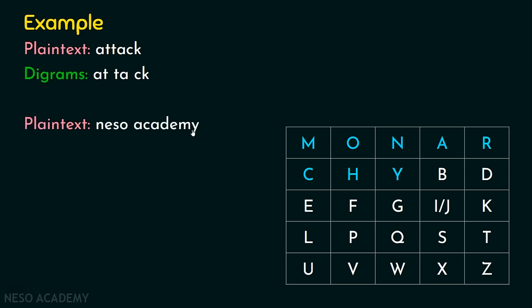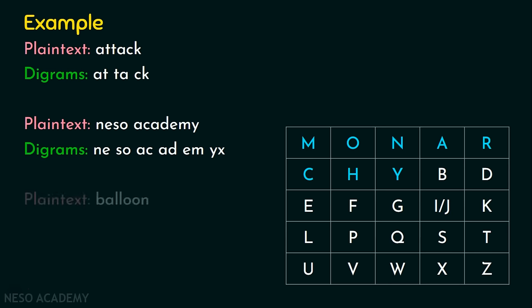For the plain text Neso Academy, we create digrams: NE, SO, AC, AD, EM, and the last letter Y is left alone. If the last letter of the plain text is left alone and not part of a digram, insert a filler character X so it becomes a complete digram, giving YX. While decryption, we can remove this filler letter.